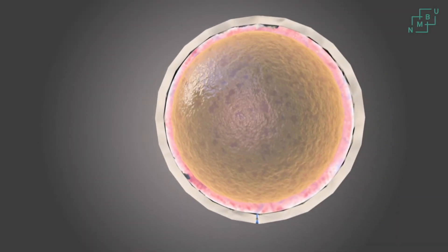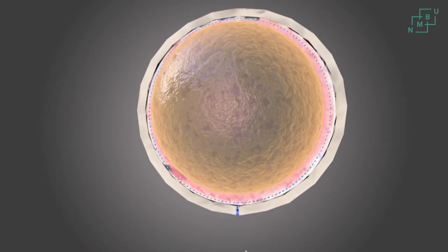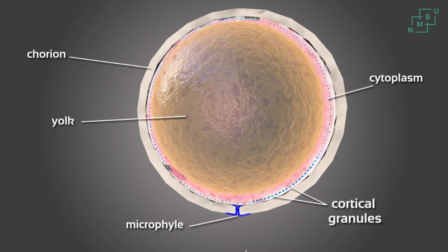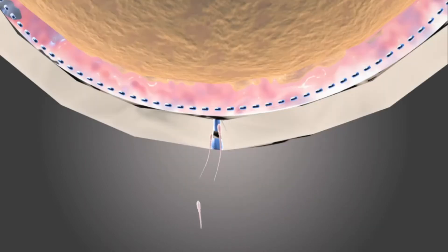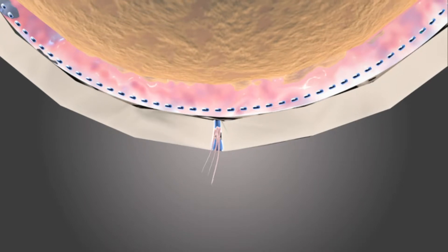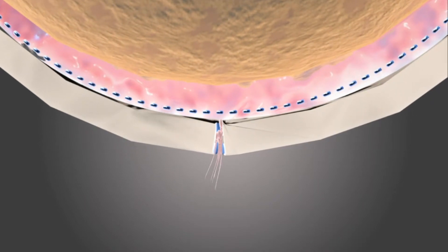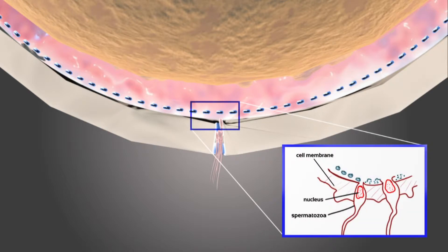Embryo development begins with fertilisation. The spermatozoa enter the oocyte through the micropyle. A single spermatid releases its genetic material into the oocyte, leading to the fusion of the male and female genetic material and the formation of the zygote.